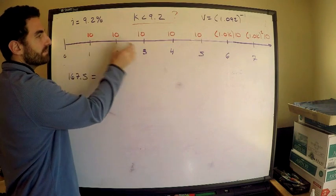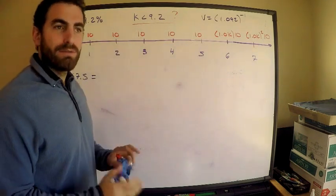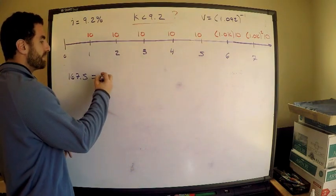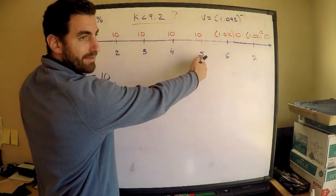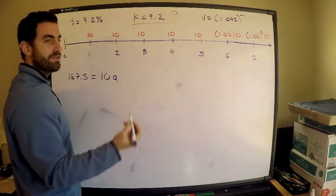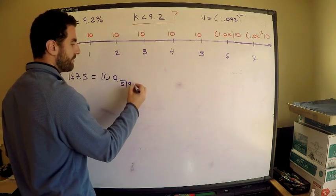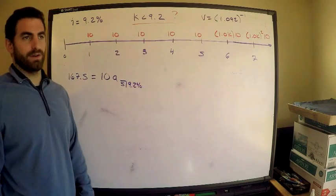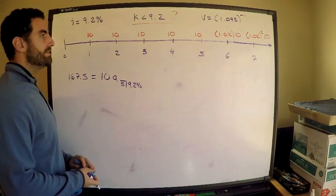If I just want the present value of these first five payments, it's the payment times an annuity immediate, and I have five of them at interest rate 9.2%. This is calculator work, and I'll show you how to do that on the calculator.